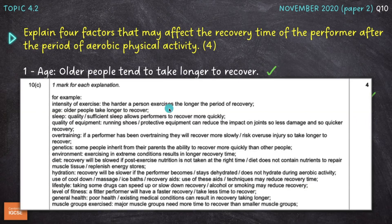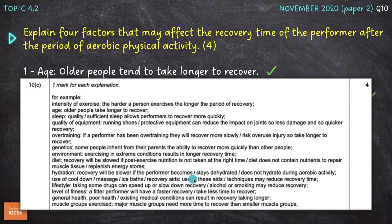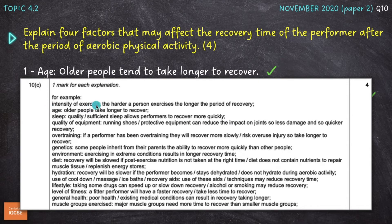The mark scheme includes many different points: muscle groups exercised, general health, level of fitness, lifestyle — taking drugs can speed up or slow down recovery, and smoking reduces oxygen transport and slows recovery. Hydration — recovery is slower if the performer stays dehydrated. Diet — recovery slows if nutrition is not taken at the right time; protein is needed to repair damaged muscle fibers and carbohydrate to replenish glycogen stores. Also: environment, genetics, overtraining, quality of equipment, sleep — sufficient sleep allows performers to recover more quickly — and the intensity of exercise.